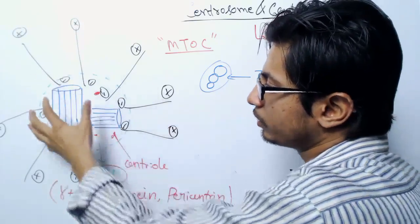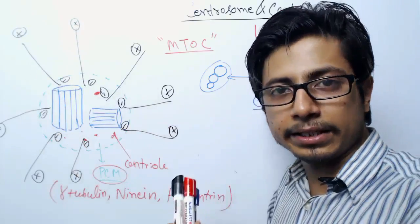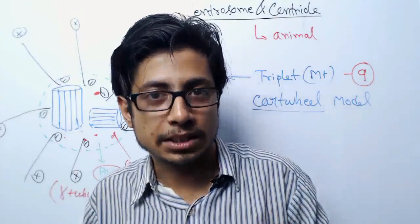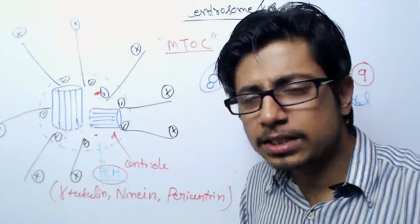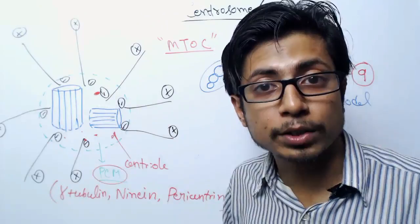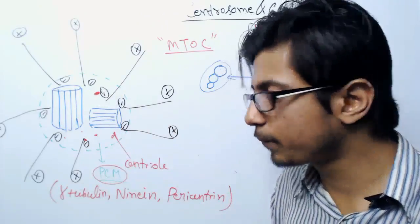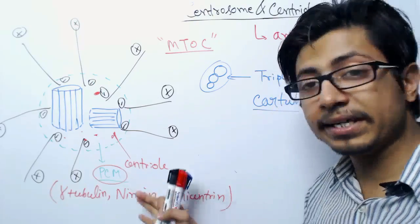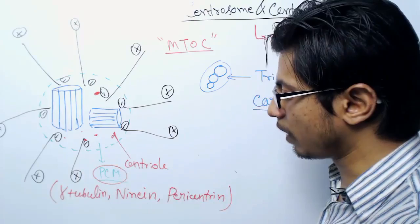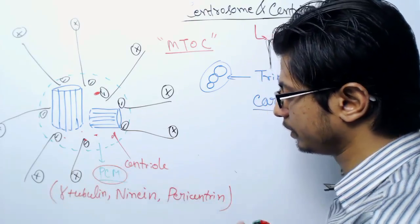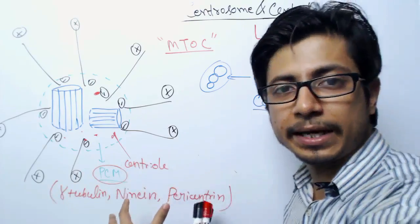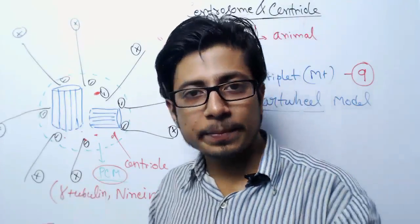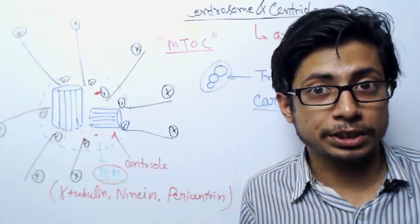The centriole is surrounded by a dense material — the pericentriolar material, or PCM. Its composition is similar to cytosol but more dense because it contains many different protein molecules. Examples of proteins found in the PCM include gamma-tubulin and pericentrin. These proteins help microtubules grow by organizing tubulin dimers to form microtubules.